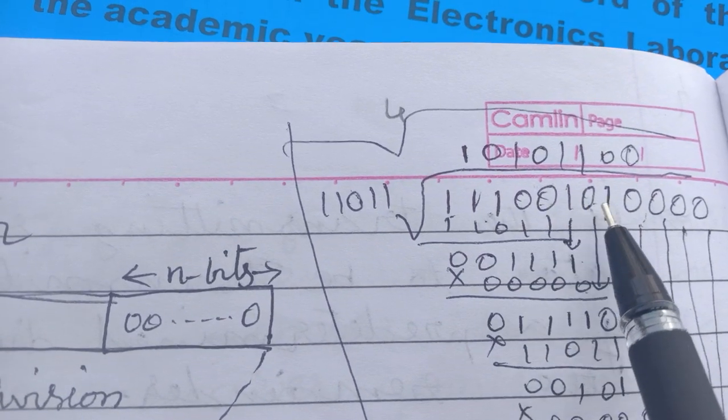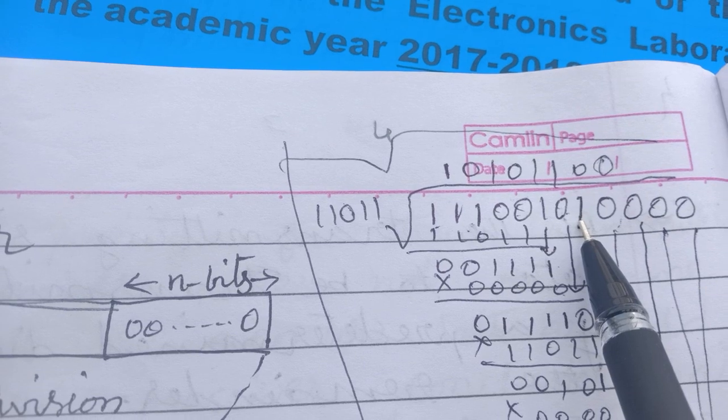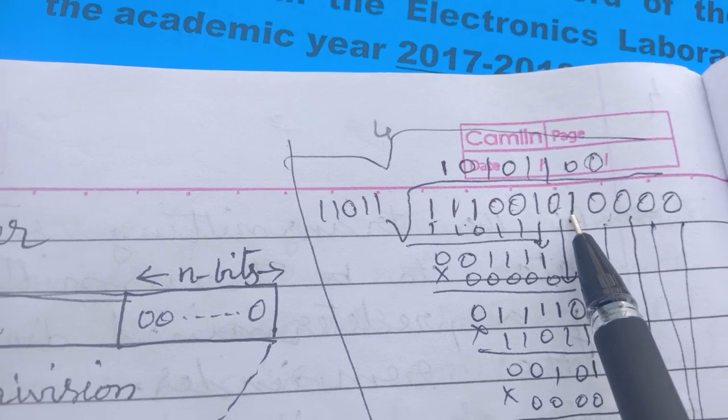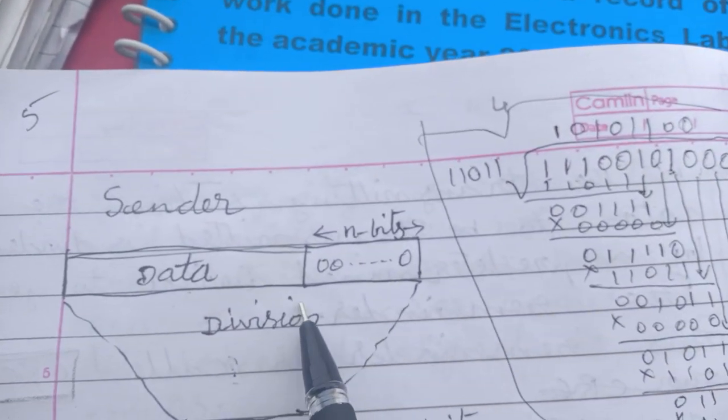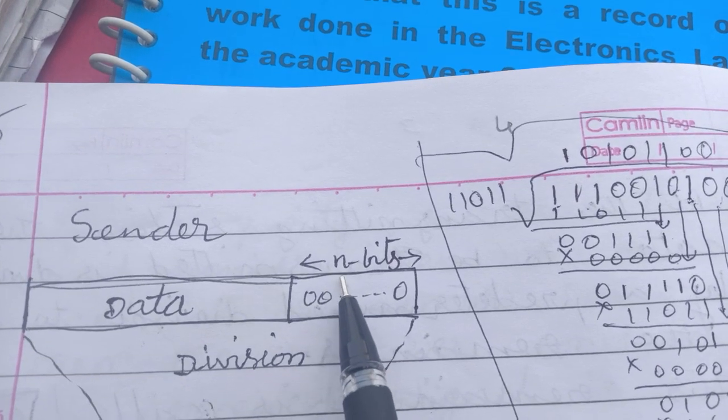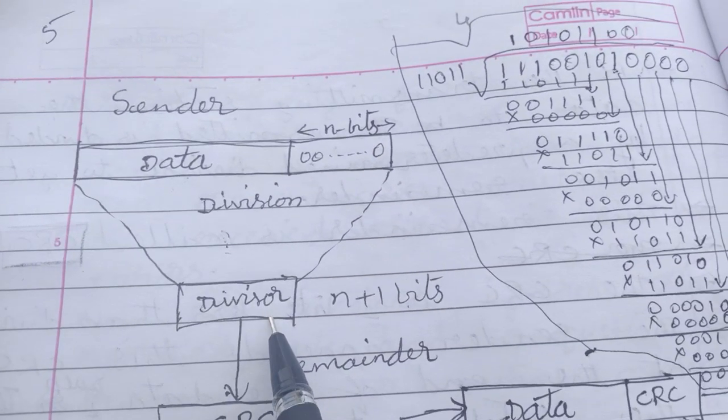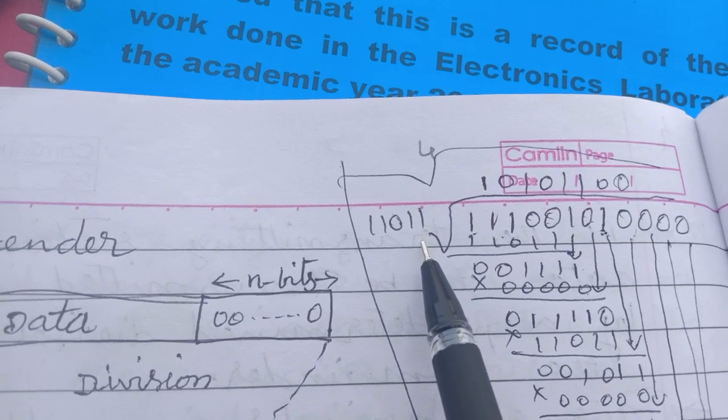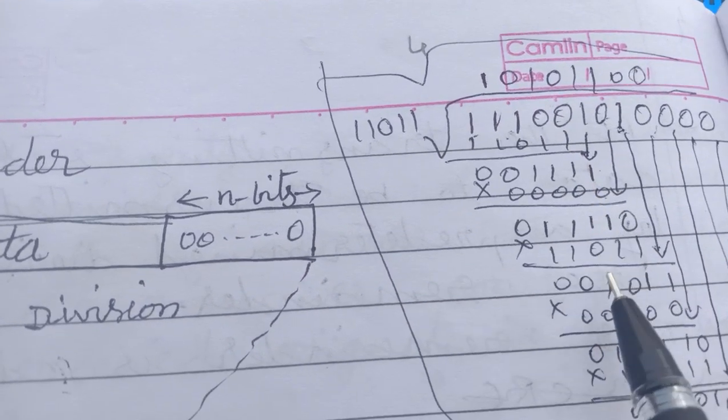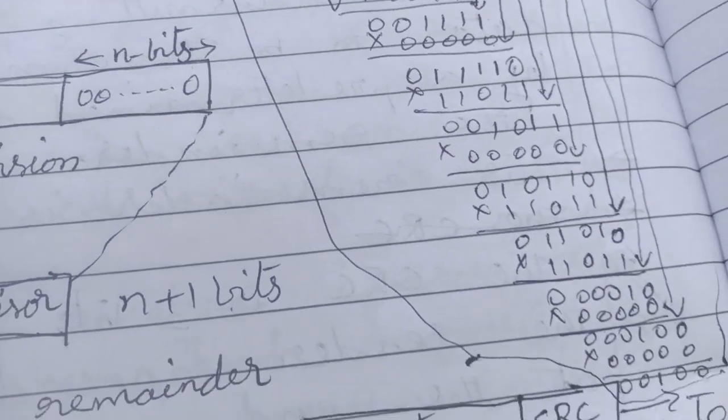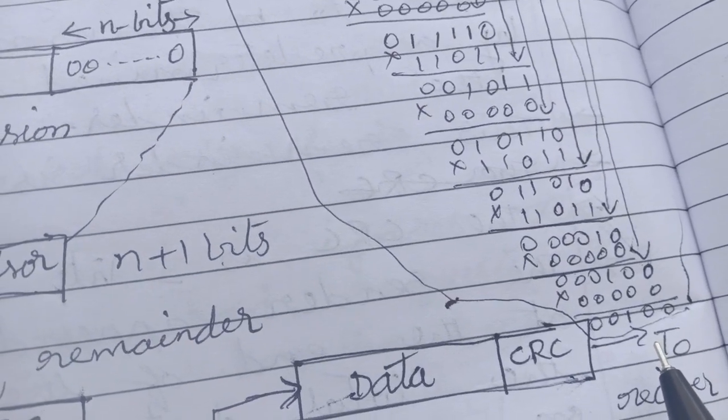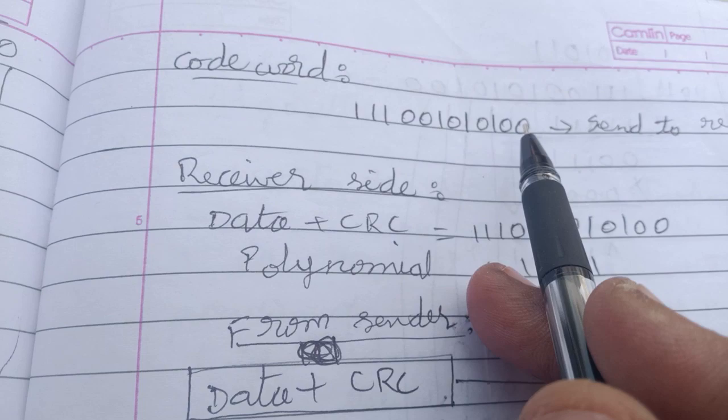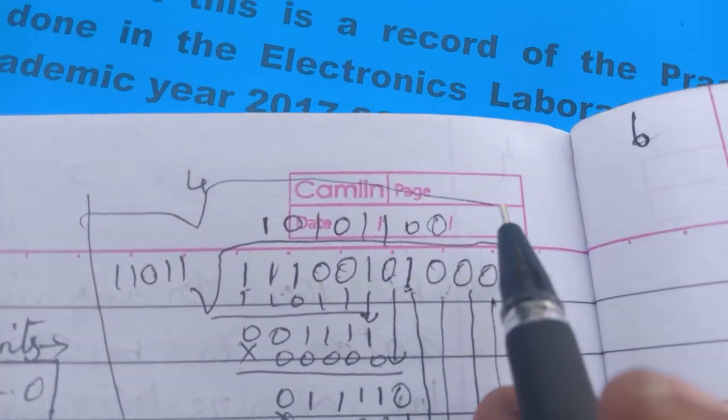1100101 is the actual digital data to be transmitted from sender to receiver. But to generate the CRC code, we are dividing this data with the polynomial 110011. After completion of the division, whatever reminder we are getting, that reminder is added to the data to be transmitted. So how to perform this division?